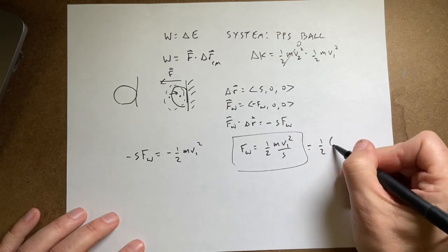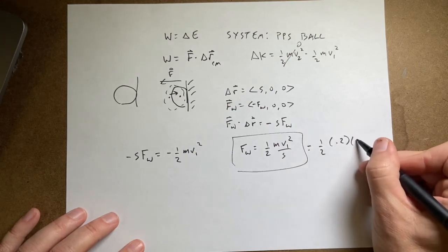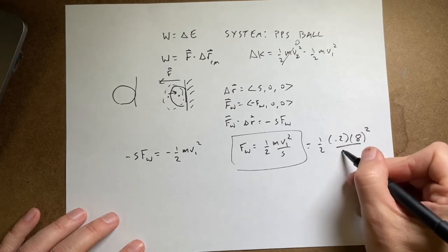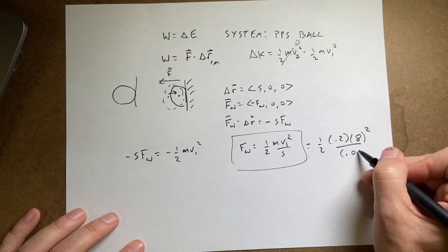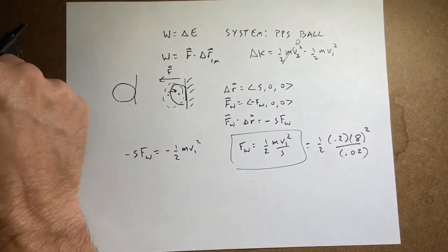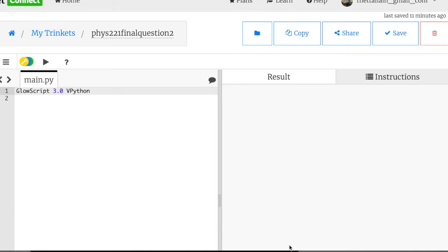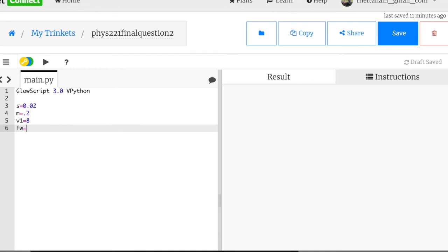So let's put in one half times 0.2 kilograms. The initial velocity squared was 8 squared over the distance of 0.02. So I'm switching over to Python. Python is the best calculator ever. And I'm going to enter in my values. So I'm going to say s equals 0.02, m equals 0.2, v1 equals 8. So fw is going to be equal to 0.5, which is one half, times m times v1 squared. Squared in Python is star star, not hat. Don't do that. And then divide by s.